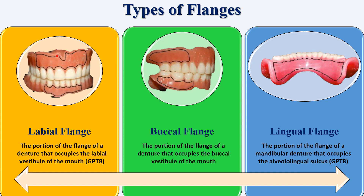The labial flange area is the portion of the flange of a denture that occupies the labial vestibule of the teeth. This is the maxillary labial flange area and this is the mandibular. Here you can see a notch — this is for the labial frenum which is present on the maxilla. That notch is very essential; otherwise there will be dislodgement of the denture and undue pressure if we don't provide that notch.